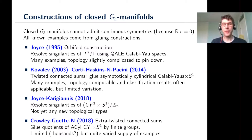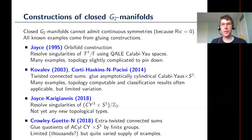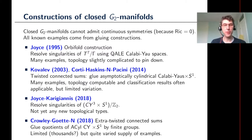One of the difficulties in studying holonomy G2 compared with other special holonomy groups is that a lot of the other special holonomy groups have a close relationship to complex manifolds, giving a straightforward way to apply techniques from complex geometry. But G2 manifolds live on odd-dimensional manifolds, so the relationship is a bit less direct. What you can do is try to glue together pieces that are complex times something odd-dimensional and flat — that's the best you can do in terms of relating it to complex geometry.